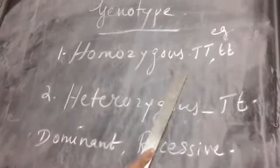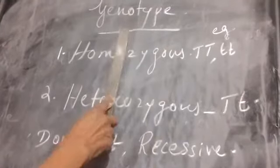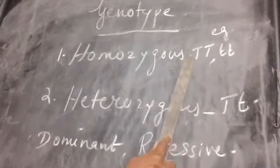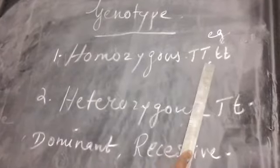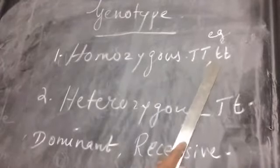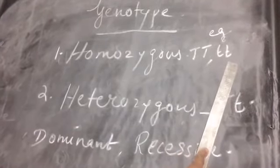Genotype can be of two types: homozygous or heterozygous. Homozygous version of genotype means both the factors are the same — the maternal version and the paternal version will be the same, both capital or both small letters. For example, if the phenotype is tall, it can be represented in the homozygous version as capital T, capital T. And if a plant is short, it will be small t, small t.